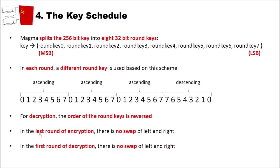In the last round of encryption there is no swap of left and right. Accordingly, in the first round of decryption there is also no swap of left and right.